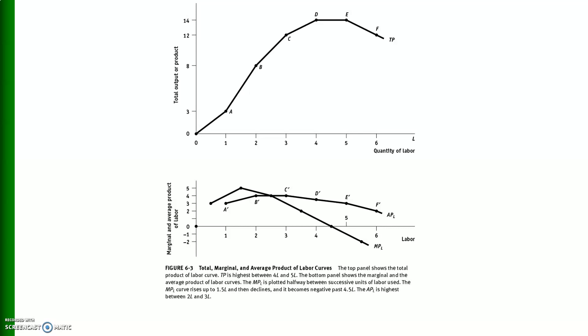The upper portion of this figure shows the total product of labor, which is increasing at a decreasing rate, then reaches a maximum and declines. In the lower diagram, the marginal product of labor is first increasing, then decreasing, reaches zero at 3.5 units of labor, and then becomes negative. The average product of labor forms a loose U-shape curve and is always positive.